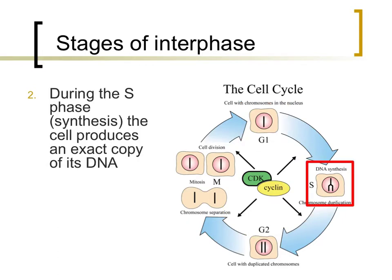When a cell divides, all the components of the one original cell end up in two newly formed cells. This would include half of the cell's DNA. If the amount of DNA were to be cut in half every generation, very soon cells would have almost no DNA. To begin with the same amount of genetic information every generation, cells undergo the second phase of interphase, which is referred to as the S, or synthesis, phase, to prepare to divide again.